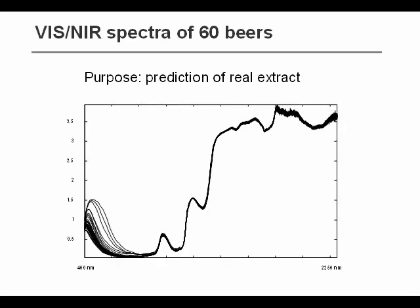Let's have a look at an example. Here's a set of spectra measured on 60 samples, which are 60 different beers. Additionally, we have also measured what is called the real extract, which is a quality parameter in beer production.